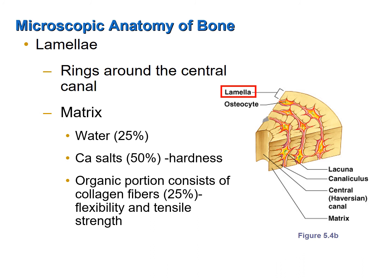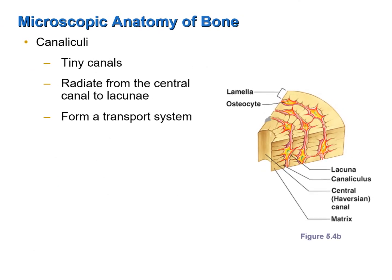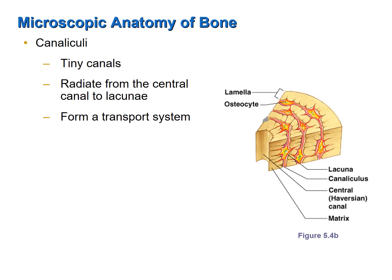Located between the concentric circles are little cavities called lacunae, where the bone cells — osteoblasts and osteocytes — are found. Extending from the central canal to the lacunae and from one lacuna to another are tiny canals called canaliculi. These canaliculi form a transport system allowing substances to move from the central canal to nearby osteocytes and then from those osteocytes to others farther away from the central canal.